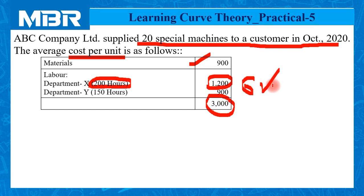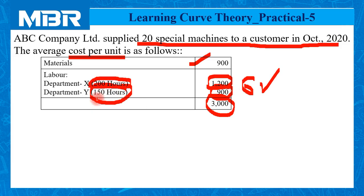While in the case of Department Y, Rs. 900 is the total labor cost and working hours are 150. So Rs. 900 divided by 150 hours — the rate of labor for Department Y is also Rs. 6.